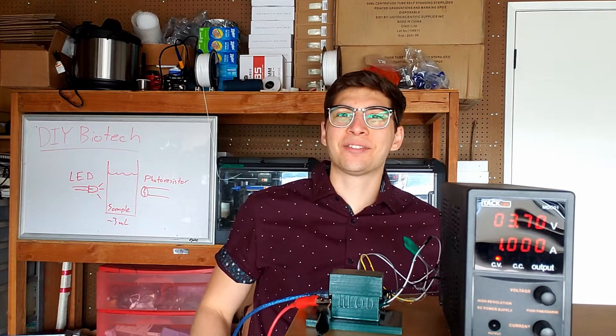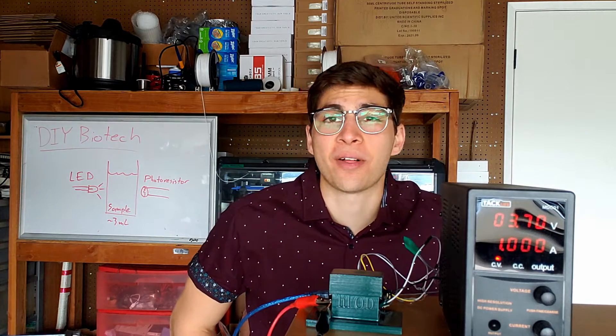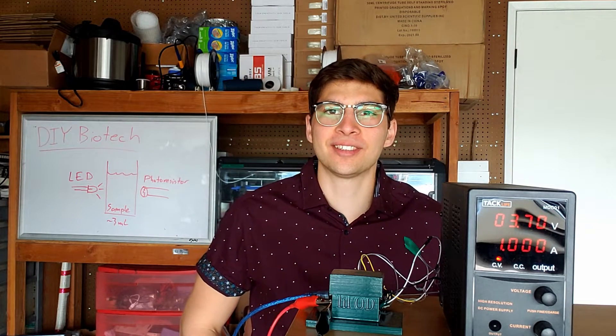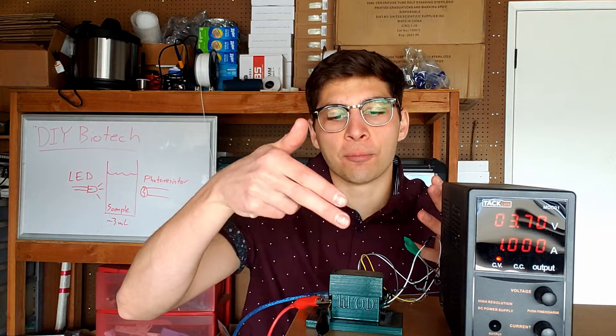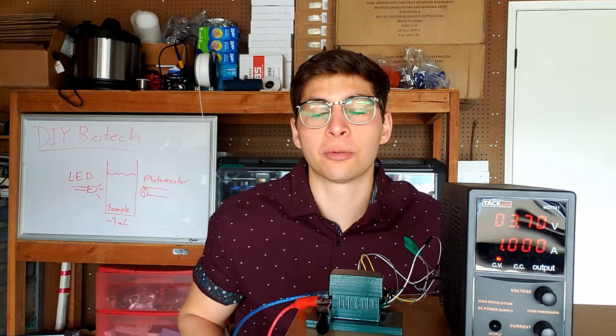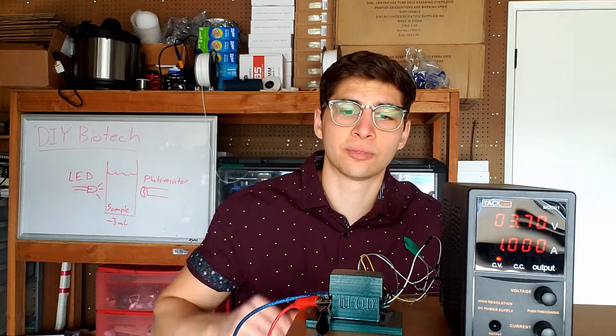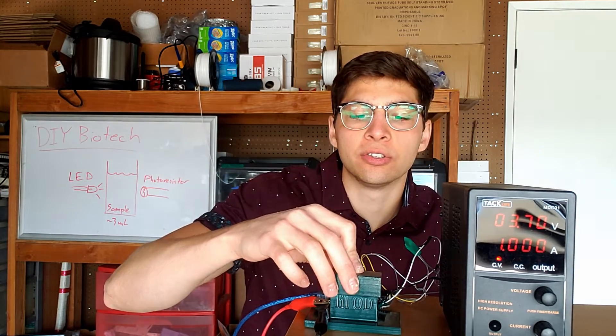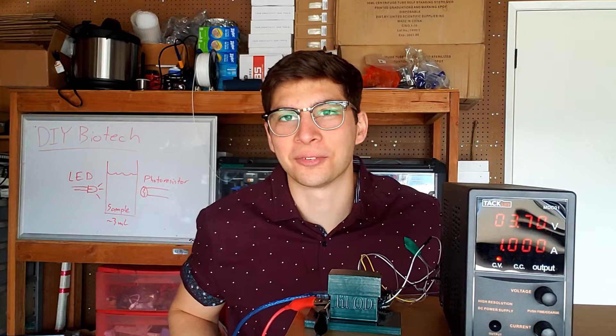The cheapest one that I could find from Jeff Bezos was about $300 and I was not prepared to pay $300 for an optical density meter. So I've built this one which you can put together probably for less than $20. This one happens to have a 3D printed case, but you could build it out of a cardboard box if you really wanted to.